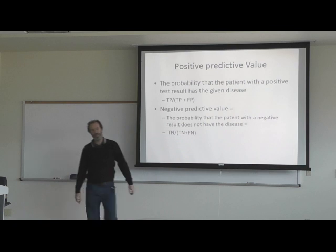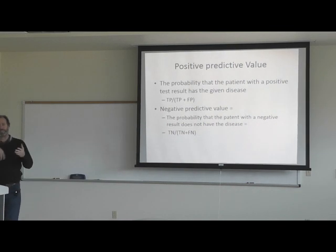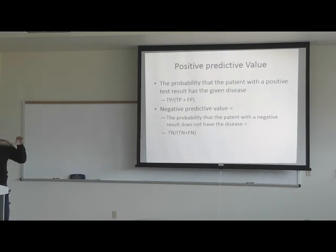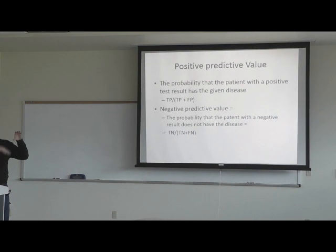Positive predictive value is the probability that a patient with a positive test result has the given disease. That's equal to the total number of true positives divided by all the positives. The negative predictive value is the exact opposite — total number of true negatives divided by all the negative results. In the math book there are examples where you switch where the decision limit is.